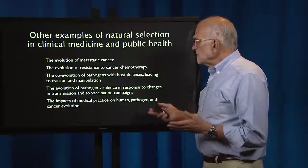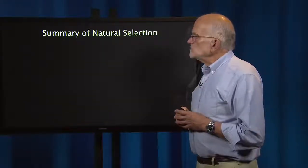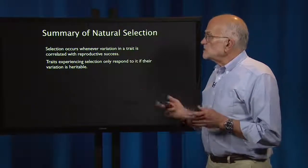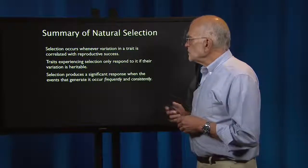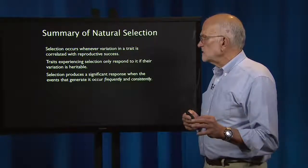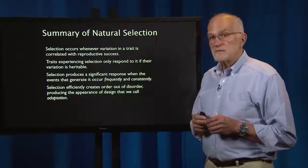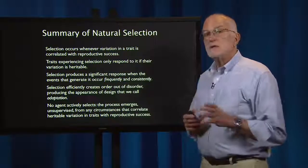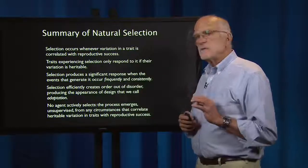The impacts of medical practice on human, pathogen, and cancer evolution all involve natural selection. To summarize: selection occurs whenever variation in a trait is correlated with reproductive success. Traits experiencing selection only respond if their variation is heritable. Selection produces a significant response when the events that generate it occur frequently and consistently. Selection efficiently creates order out of disorder, producing the appearance of design that we call adaptation. No agent is actively selecting — the process emerges unsupervised from any circumstances that correlate heritable variation in traits with reproductive success.